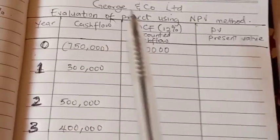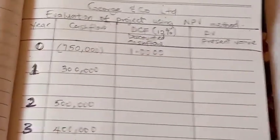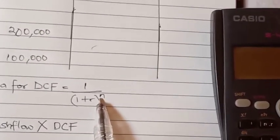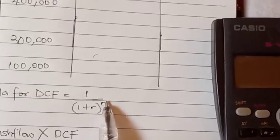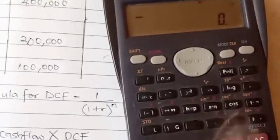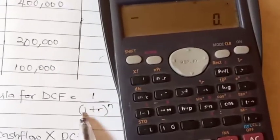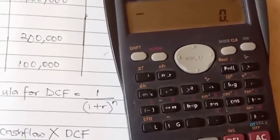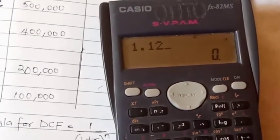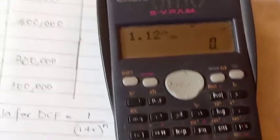To find our discounted cash flow for year 1, we'll do the same thing we did in year zero. But the only difference is that n will no longer be zero but one. The rate is still the same, so in the rate calculation after adding we got 1.12.